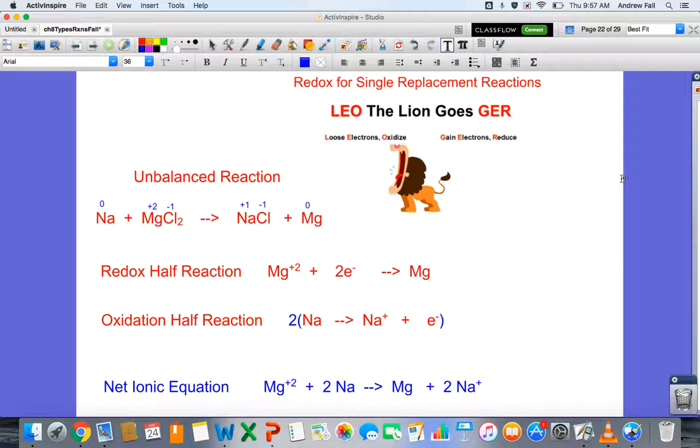Magnesium is reduced in that it gains electrons. Going from positive to neutral required the addition of two electrons, which we can see in the redox half reaction.